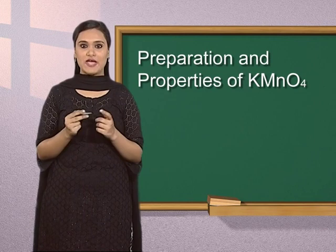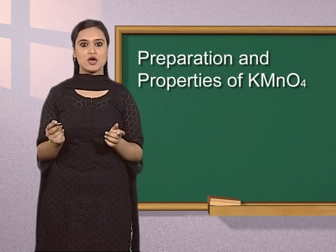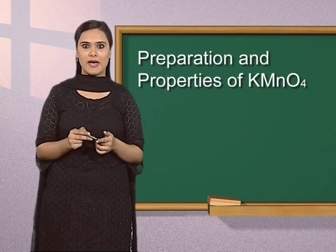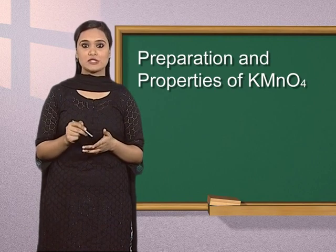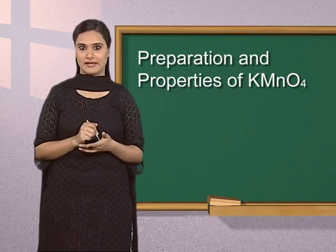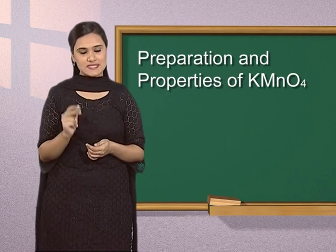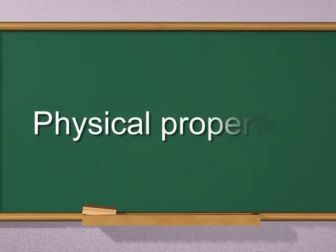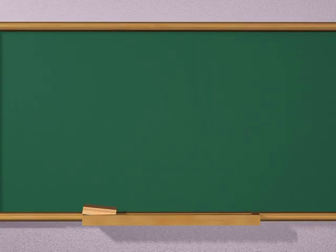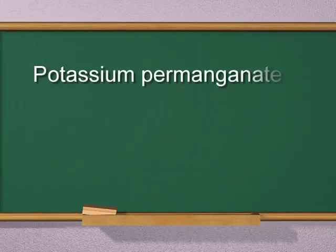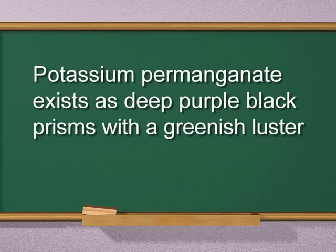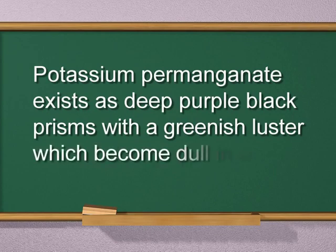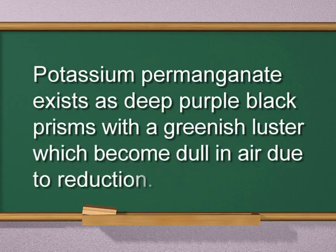After knowing about the various methods of preparation of potassium permanganate, now we will discuss its properties. First, let us start with physical properties. Potassium permanganate exists as deep purple-black prisms with a greenish luster, which becomes dull in air due to reduction.